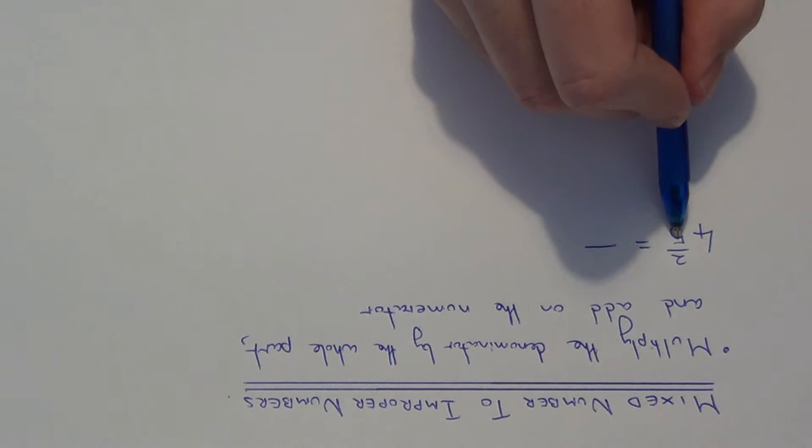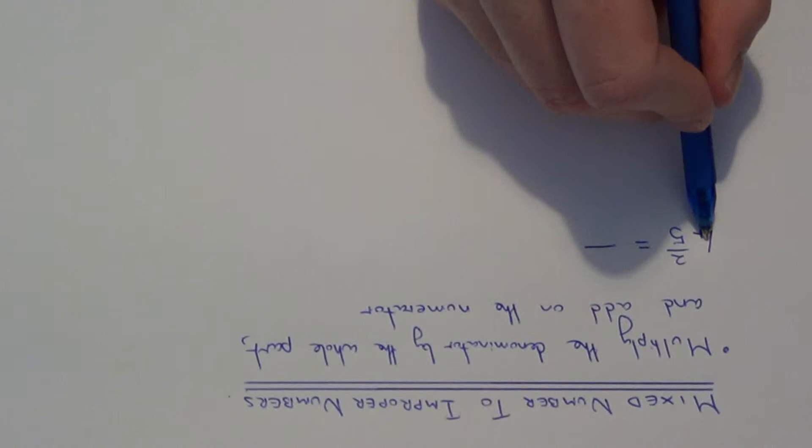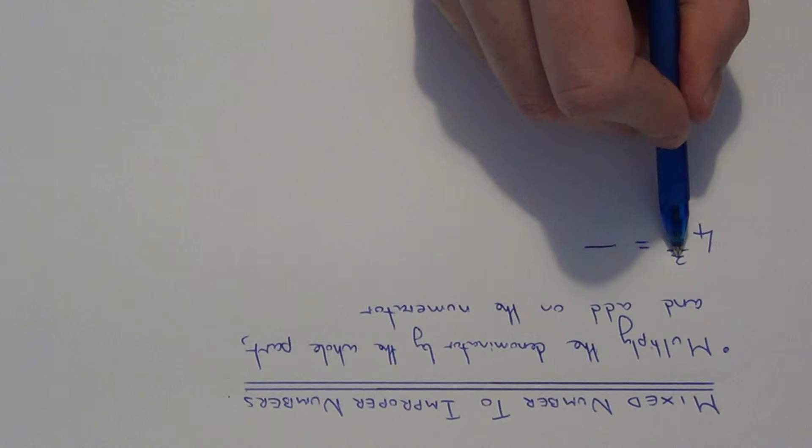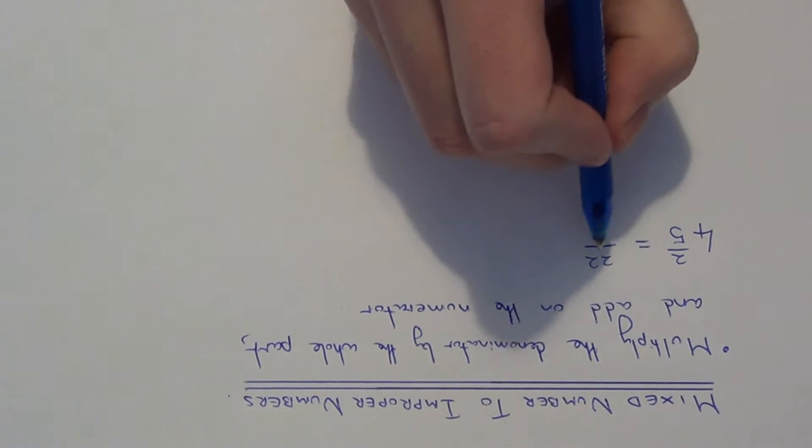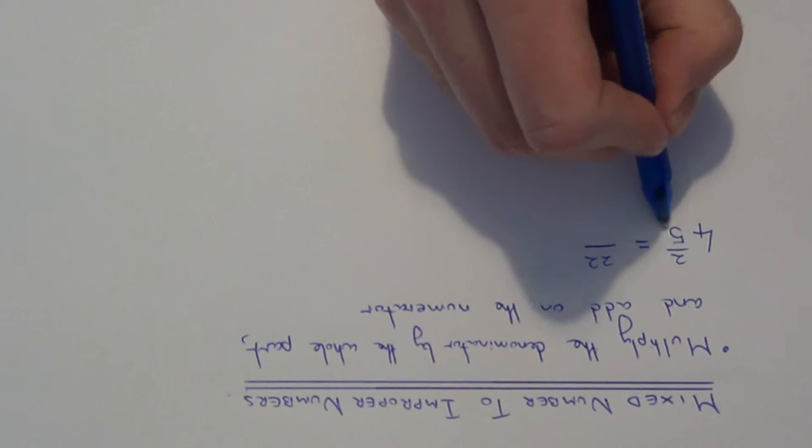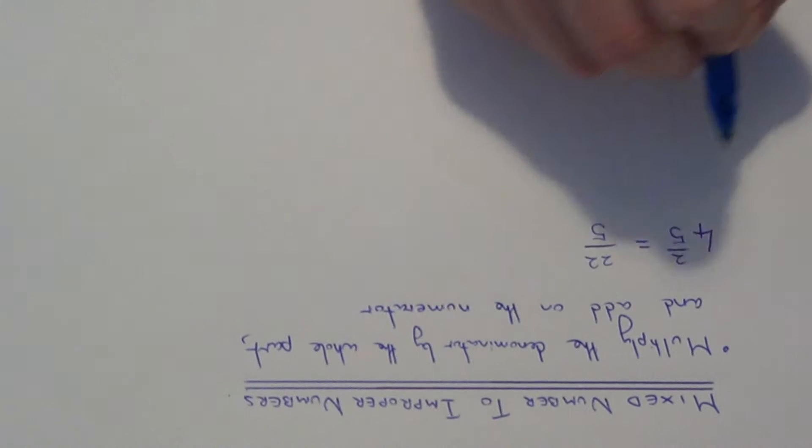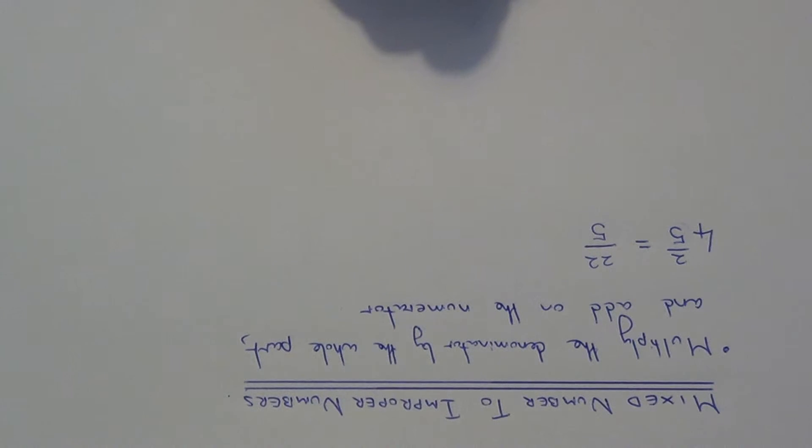So let's do 5 times 4 which is 20, add on 2 which gives 22. The denominator will stay the same, so we have 22 fifths.